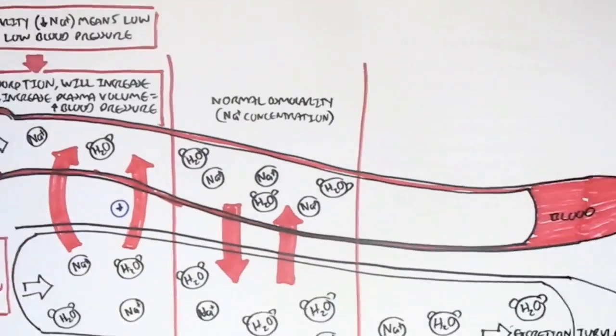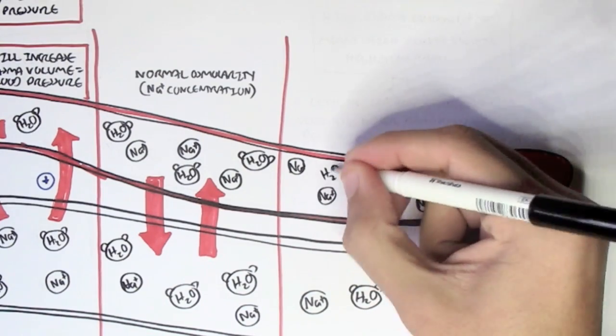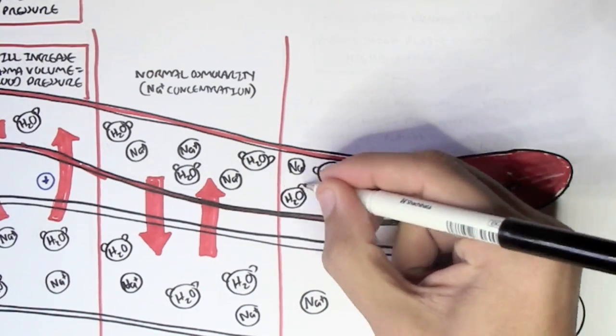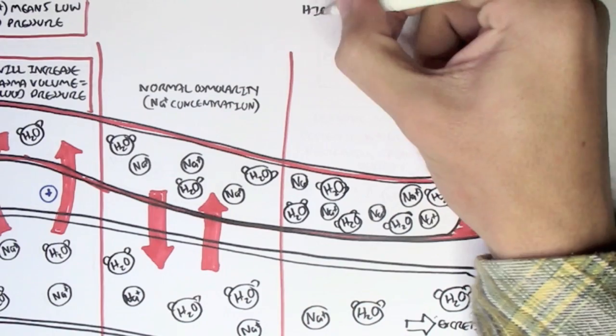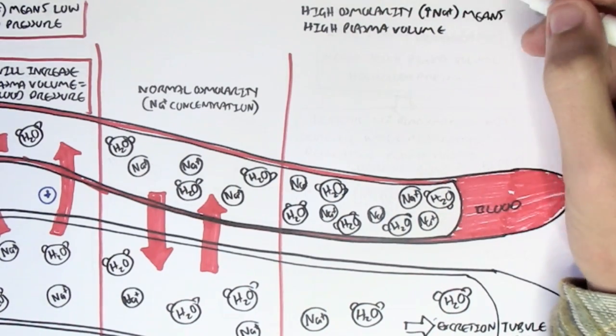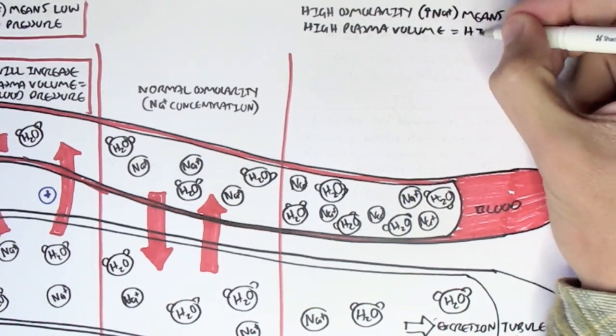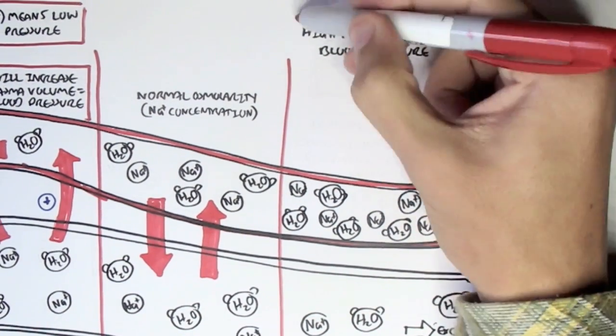We have a lot of sodium and a lot of water. When we have high osmolarity and high sodium concentrations, we would have high plasma volume due to the water. This would mean that we have high blood pressure.